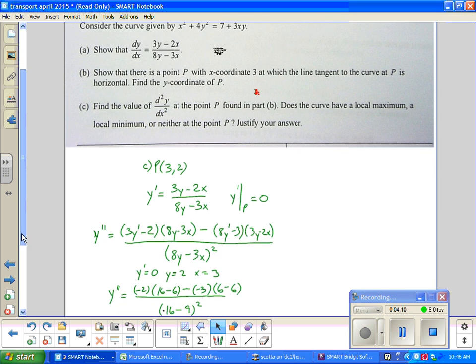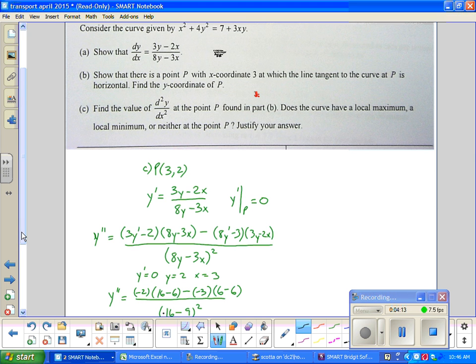But I start with knowing I did know (3,2) from letter b. And I knew the first derivative. I just rewrote it here. And I knew that y prime at P is 0. We don't want to forget that fast. So the first thing I do is just take the derivative of y prime. And again this has to be the quotient rule. There's no other way to do it. So the derivative of the top is 3y prime minus 2. And then just times the bottom. The derivative of the bottom is 8y prime minus 3 times the top. And then all over the bottom squared. This is the quotient rule guys where I made this f and this g. And f prime g minus g prime f over g squared.